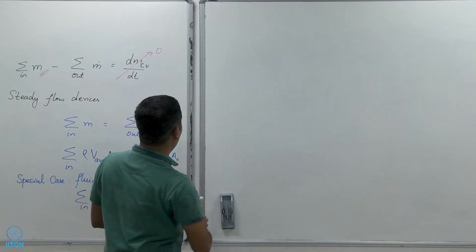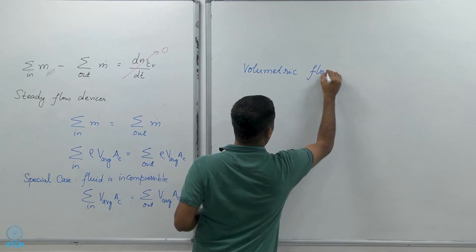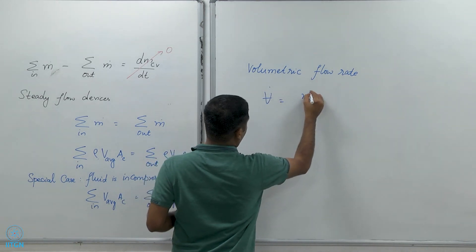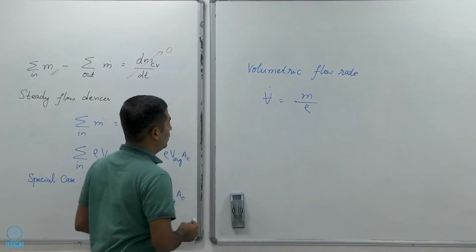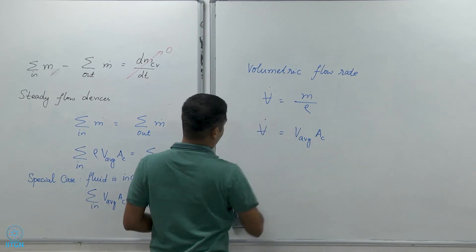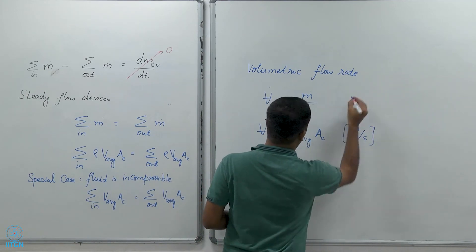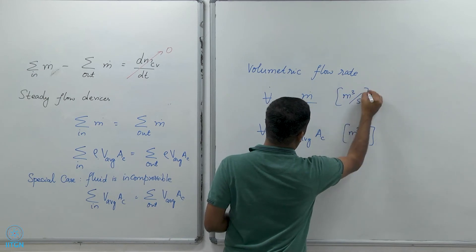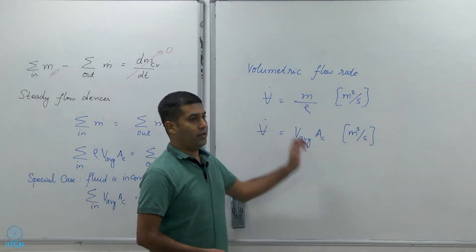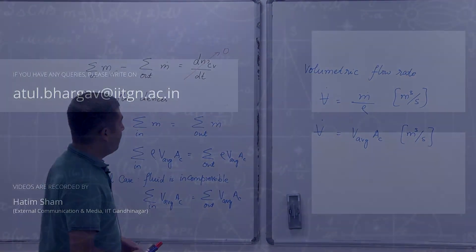We also define the volumetric flow rate, which has units of m³/s. This comes from taking the mass flow rate in kg/s and dividing by density in kg/m³, leaving m³/s.